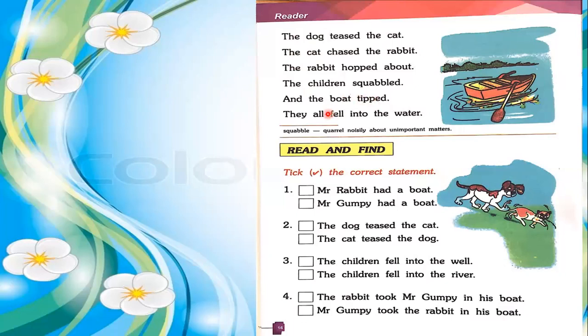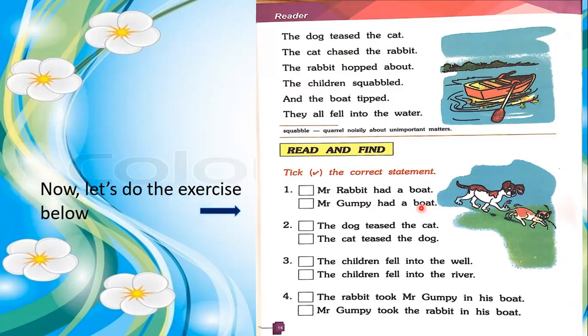The boat tipped and they all fell into the river. So the boat was tipped and they all fell into the water. Okay children, you all understand the story. Now we will read the exercise — take the correct statement. Mr. Rabbit had a boat. Mr. Gumpy had a boat. The correct answer is Mr. Gumpy had a boat.